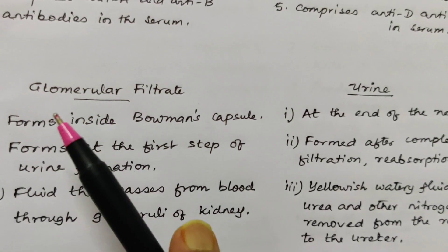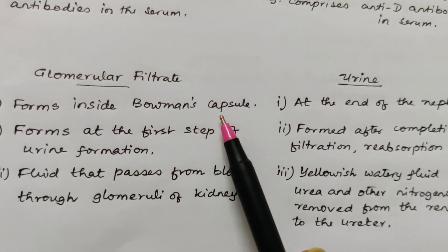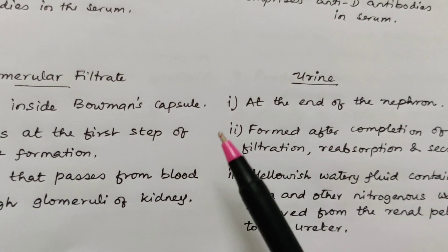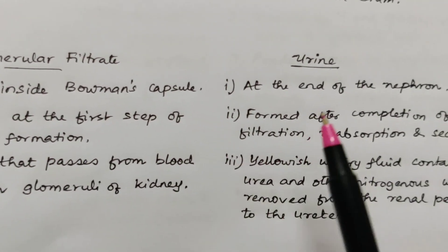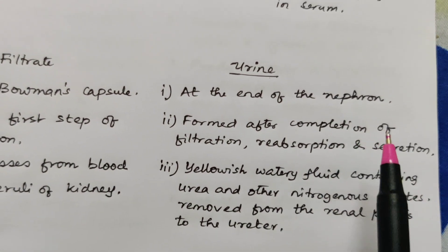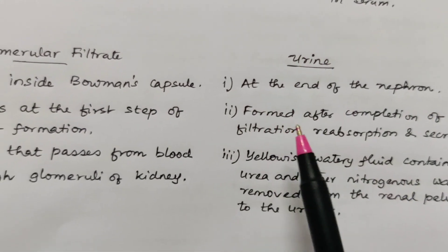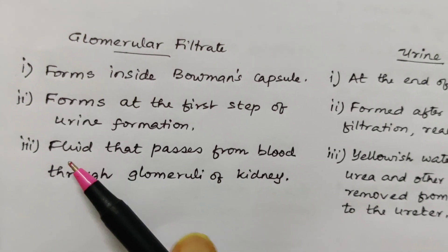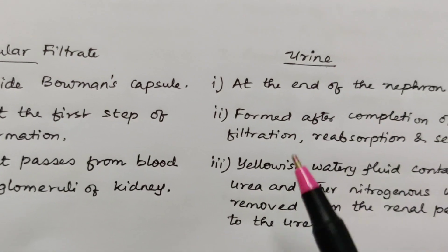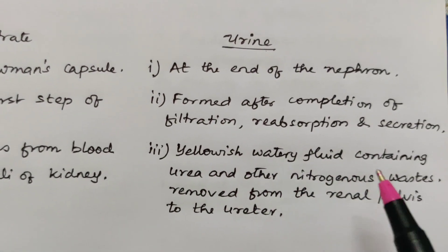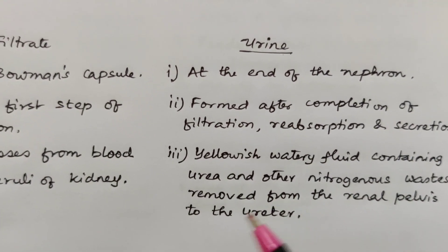Third comparison: glomerular filtrate and urine. Glomerular filtrate forms inside the Bowman's capsule — from the excretory system — and urine is formed at the end of the nephron. Glomerular filtrate forms at the first step of urine formation, whereas urine is formed after completion of filtration, reabsorption, and secretion processes. Glomerular filtrate is a fluid that passes from blood through the glomeruli of kidneys, whereas urine is a yellowish watery fluid containing urea and other nitrogenous wastes, removed from the renal pelvis to the ureter.